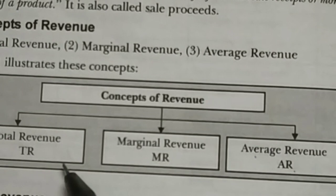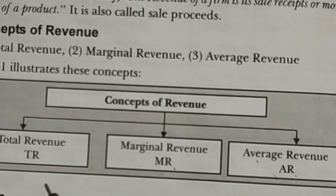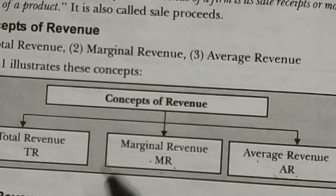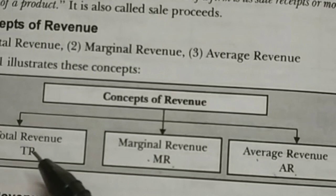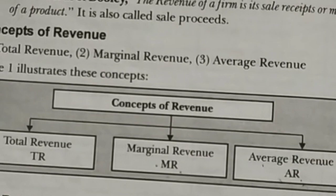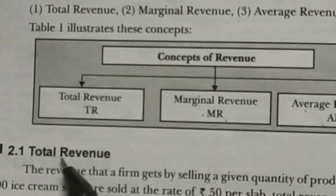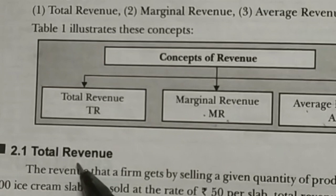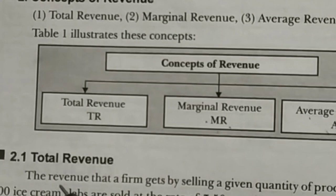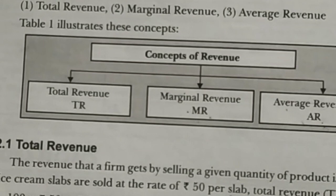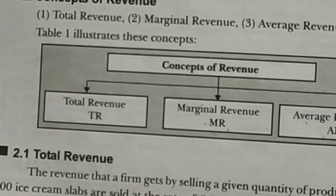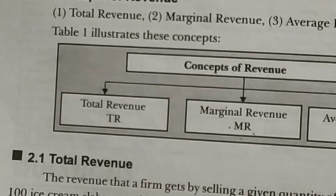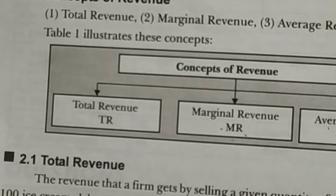Just as in economics we have the concept of average, total, and marginal for utility, product, and cost, similarly here we have three concepts: TR, MR, and AR. Total revenue is simply price multiplied by quantity. For example, if 100 units of a product are sold at a price of 50, then total revenue will be equal to quantity multiplied by price, which is equal to 5,000. That is TR, total revenue.